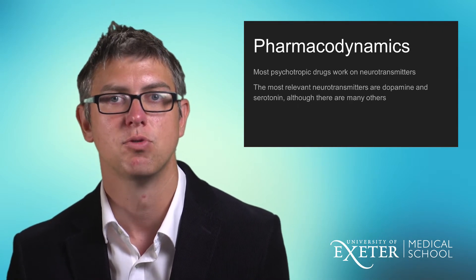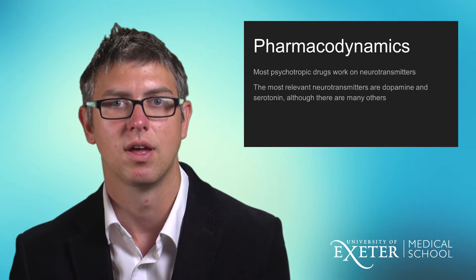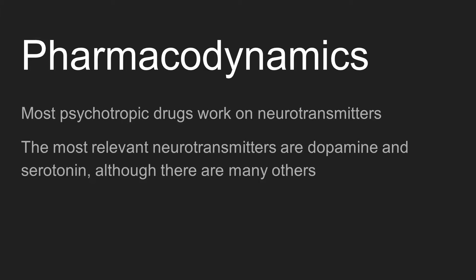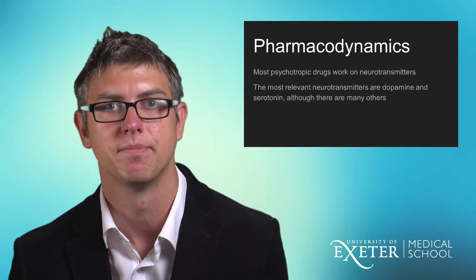In terms of broad principles when thinking about prescribing for someone, it's important to consider the pharmacodynamics of the drug. Pharmacodynamics means how the drug works and has its effect in the body, and for psychotropic drugs generally they work on neurotransmitters. The ones you'll come across most in mental health are dopamine and serotonin, though there are plenty of others — we'll also be mentioning acetylcholine and noradrenaline later on.